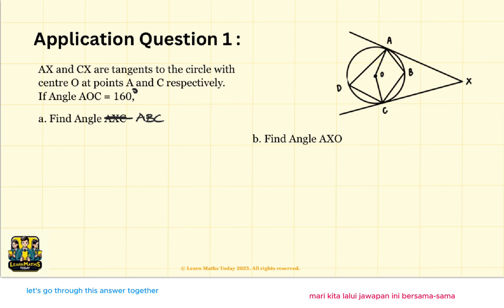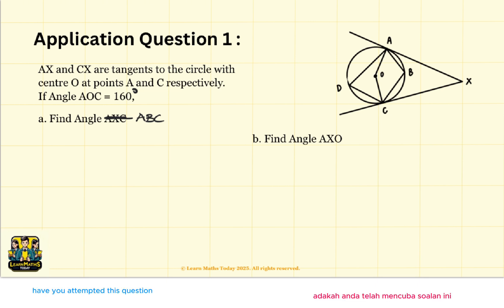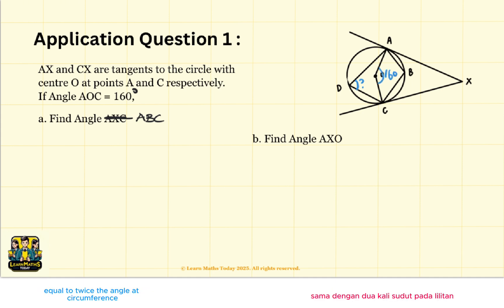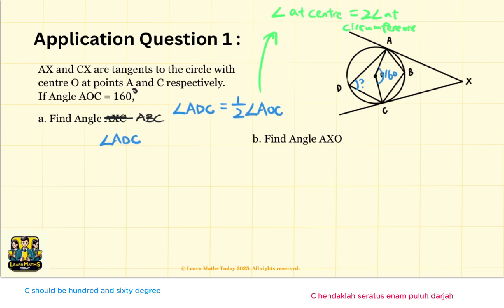Let's go through this answer together. Let's start by defining angle ADC. We know that angle AOC is 160 degrees, and we know that the angle at the center equals twice the angle at the circumference. So angle ADC should be 160 degrees divided by 2, equal to 80 degrees.